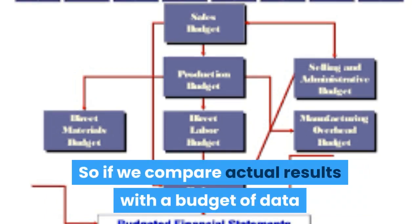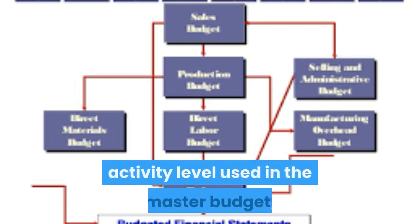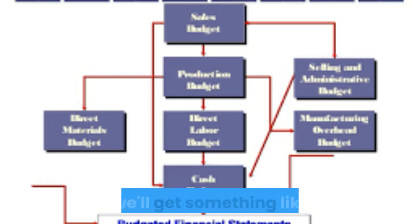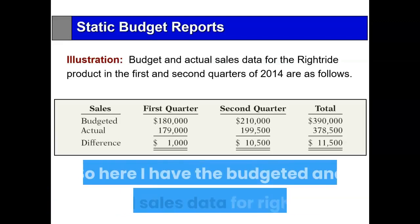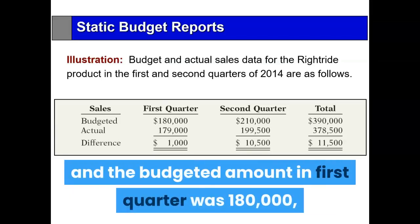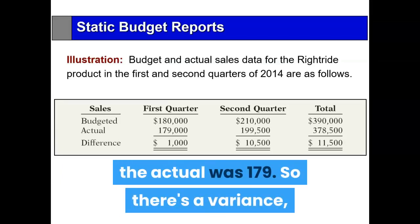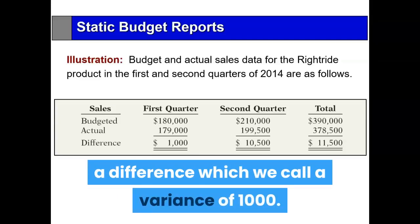If we compare actual results with the budgeted data and the actual results are at the activity level used in the master budget, then it works well when talking about sales. Here we have the budgeted and actual sales data for Right Tide. The budgeted amount in the first quarter was $180,000; the actual was $179,000. So there's a difference, which we call a variance, of $1,000.